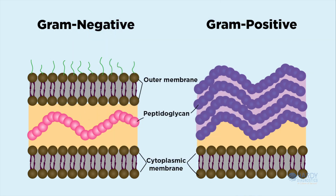Bacteria that stain dark blue-purple are called gram-positive. They have a thick peptidoglycan layer that retains the primary dye. Conversely, bacteria that stain pink to red are called gram-negative. They have a thin peptidoglycan layer that loses the primary dye when flooded with alcohol.